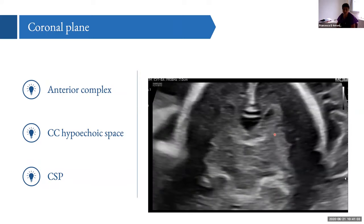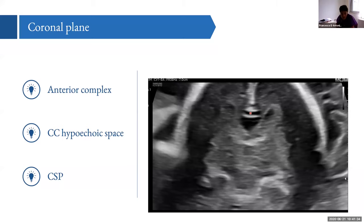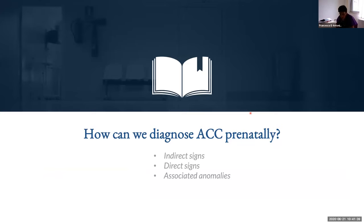For more experienced operators, a coronal view of the fetal brain can also be obtained. On this view you can see the interhemispheric fissure, the sulcus of the corpus callosum, and just slightly above the cavum septum pellucidum, the corpus callosum itself as an anechoic structure. So we can visualize the corpus callosum directly via sagittal and coronal views, and indirectly by assessing the cavum septum pellucidum.